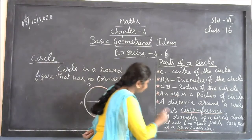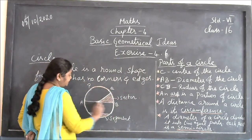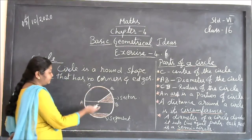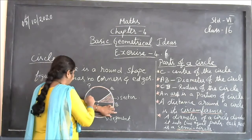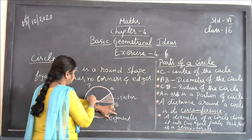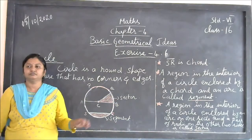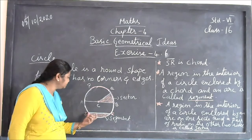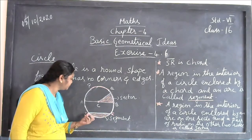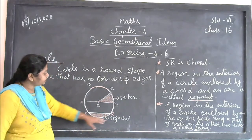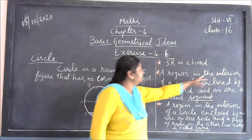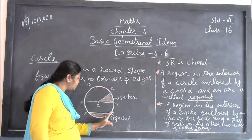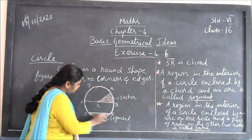The next one is the semicircle. The diameter divides the circle into two halves — each half is called a semicircle, meaning half circle. The chord: SR is a line inside the circle — from here to here, this line is called the chord. Only this line SR is called the chord. The region enclosed by the chord inside the circle is called the segment.